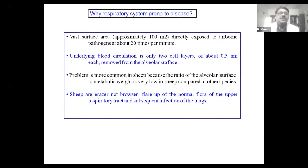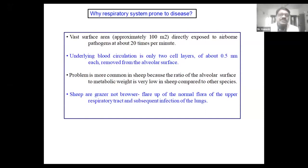The lung is described as a hub of pathogens. The lung is vulnerable for disease because the blood circulation in the lungs — the blood vessel cell wall is very, very thin. So the pathogen will cause pneumonia. In sheep, this pneumonia problem is more than in other species because sheep is a grazer and not a browser. Once the infection comes to the nasal cavity and upper respiratory tract, the pathogen will flourish there and that infection will spread downward affecting the respiratory system.